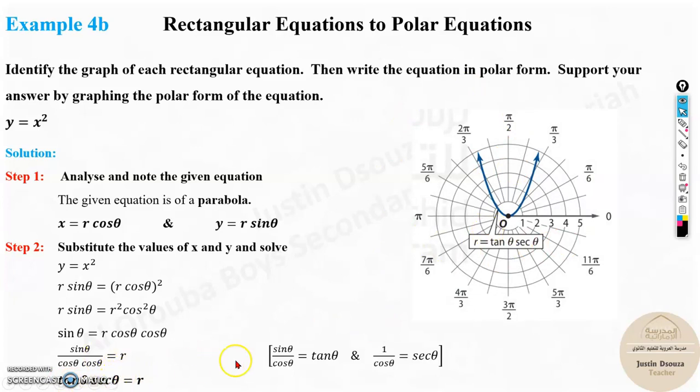This is the graph. This is the polar form of this particular rectangular equation. So now we have learned to convert rectangular to polar equations. Again, I will recall one important thing, that is the formula: x equals r cos theta and y equals r sine theta. Whenever you have been given a rectangular equation, it will be in terms of x and y. Substitute these formulas and then simplify. You will get the answer.